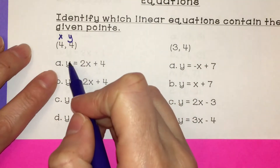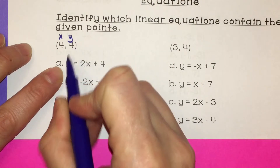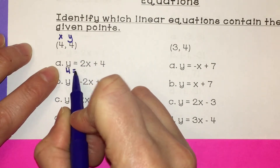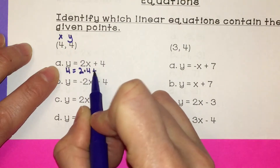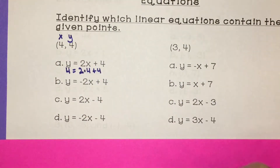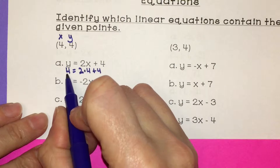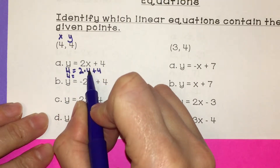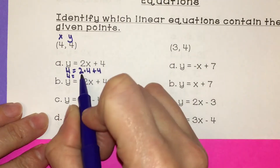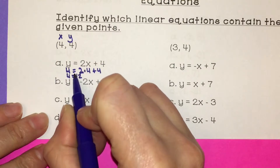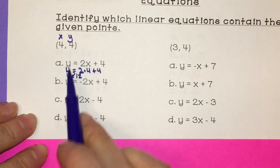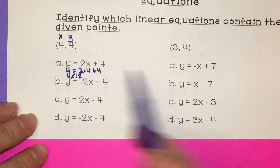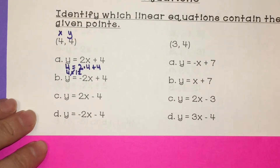So let's start. I'm going to plug 4 in for y. So 4 equals 2 times our x value, which is 4, plus 4. Now I have to simplify: 4 equals 2 times 4 is 8, and 8 plus 4 is 12. Because the two sides are not equal, I know that this point is not on this line — it does not satisfy the linear equation.